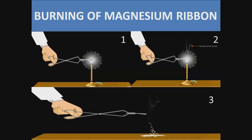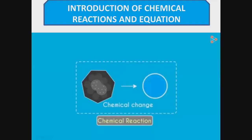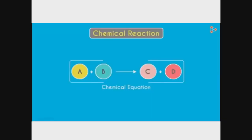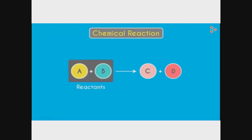Our next example is the burning of magnesium ribbon. When magnesium ribbon is burned, it generates lots of light and white fumes, and in the end it is totally converted into white ash named magnesium oxide. So, when we want to change any matter chemically, we need a chemical reaction. A process in which one or more substances — the reactants — are converted to one or more different substances — the products — is known as a chemical reaction. We can represent a chemical reaction as A + B → C + D, where A and B are reactants on the left-hand side and C and D are products on the right-hand side. An arrow shows the direction of reaction.